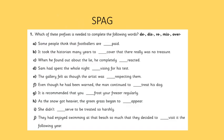Now let's do some SPAG before we proceed. Which of these prefixes is needed to complete the following words? De-, dis-, re-, mis-, over-. Children, you'll need a sheet of paper and a pen to do this work. For all your English lessons the resources you will need are a sheet of paper and a pen or a pencil. Let's start with the first question.